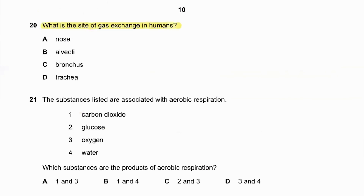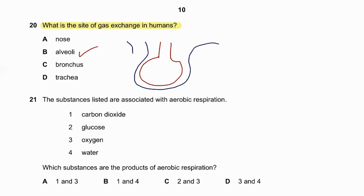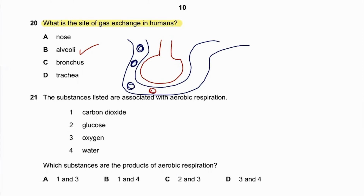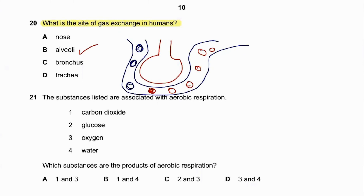Question number twenty — the last question in this video: what is the site of gas exchange in humans? Gas exchange occurs in the alveoli. Blood vessels run right next to the alveoli; deoxygenated blood comes in and receives oxygen from the alveoli, causing red blood cells to become oxygenated and leave. So the alveoli are the site of gas exchange in humans.